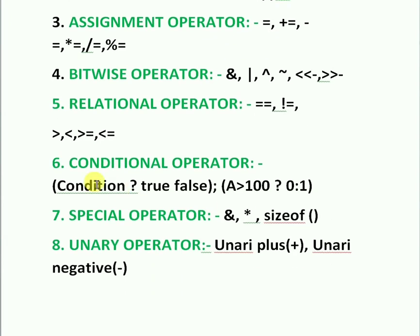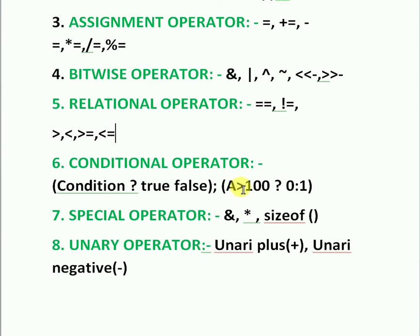Next, the conditional operator — it works with a condition that is either true or false. For example: if a > 100 and a's value is 120, then the expression is true. If a's value is 90, then a is not greater than 100, so the expression is false.